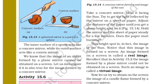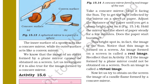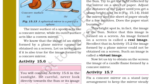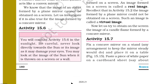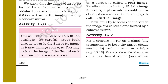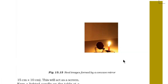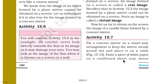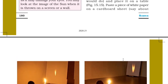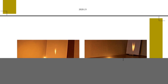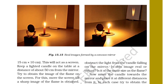Recall that in Activity 15.2, the image formed by a plane mirror could not be obtained on a screen — such an image is called a virtual image. Now let us try to obtain on a screen the image of a candle flame formed by a concave mirror. In Activity 15.7, fix a concave mirror on a stand and place it on a table. Place a piece of white paper on a cardboard sheet of about 15 cm × 10 cm to act as a screen.